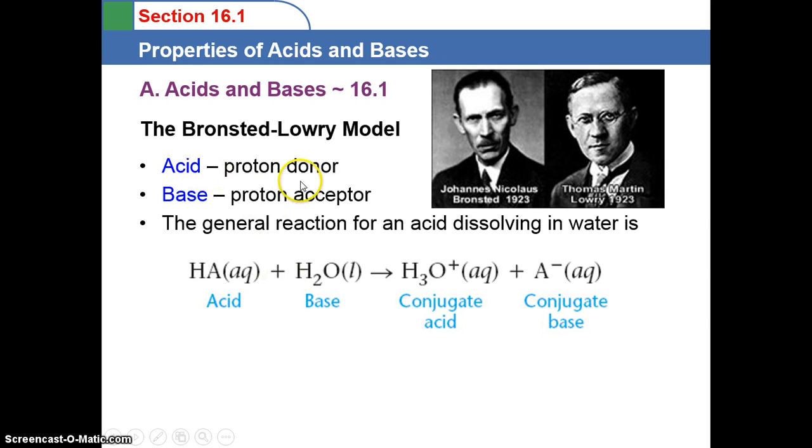They denoted these as a conjugate acid or a conjugate base. But the acid was a proton donor, so the acid on the left-hand side gave up its proton and became negative. That proton went to the water, which was the base, because it was the proton acceptor. So every acid, according to Bronsted and Lowry, has a conjugate base, and every base has a conjugate acid.